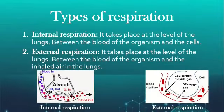Types of respiration. There are two main types of respiration: internal and external. Internal respiration takes place at the level of the lungs, between the blood of the organism and the cells. In the first figure, we can see the alveoli — the carbon dioxide diffusing from the blood to the alveoli and the oxygen diffusing from the alveoli to the blood.